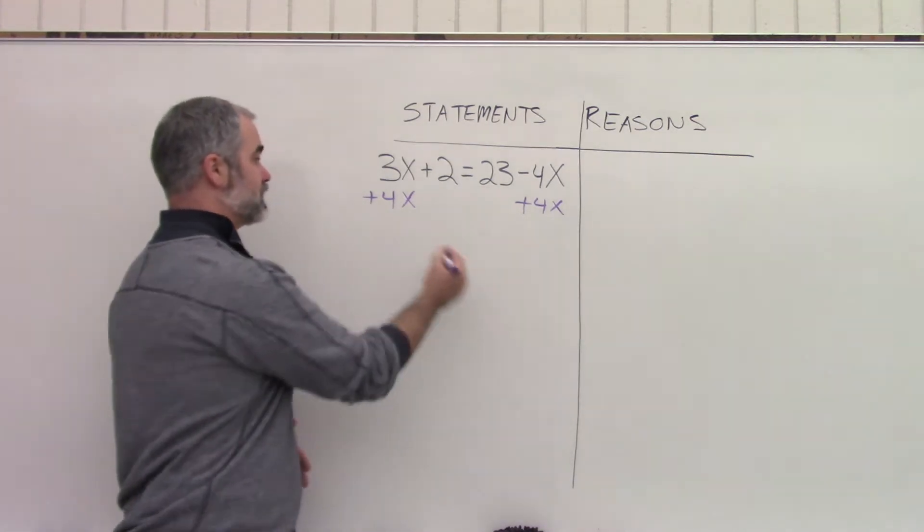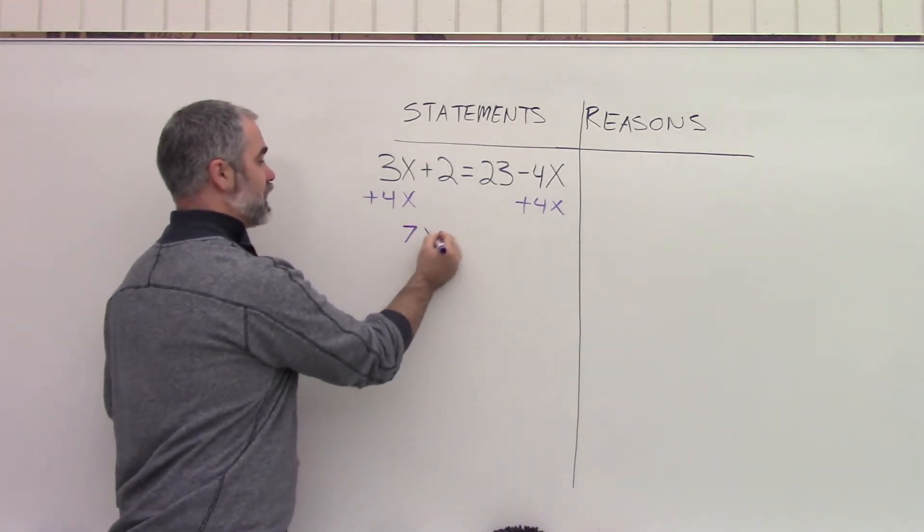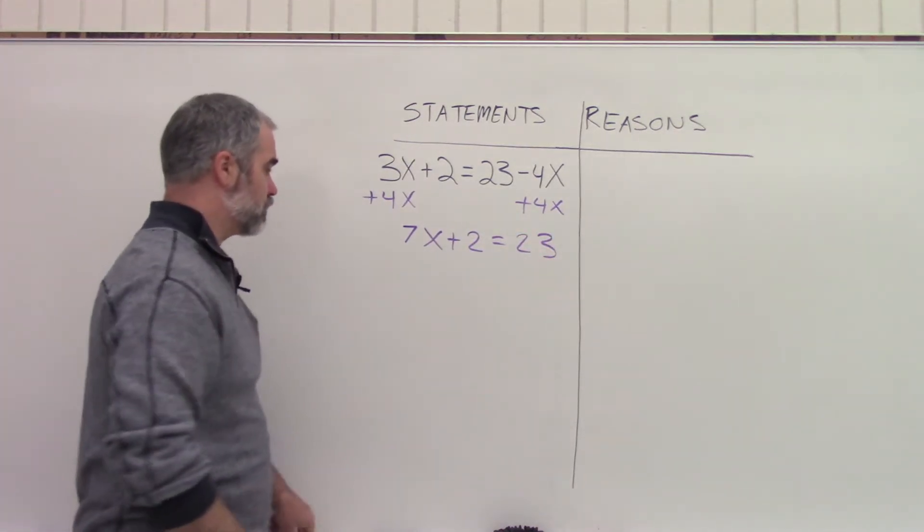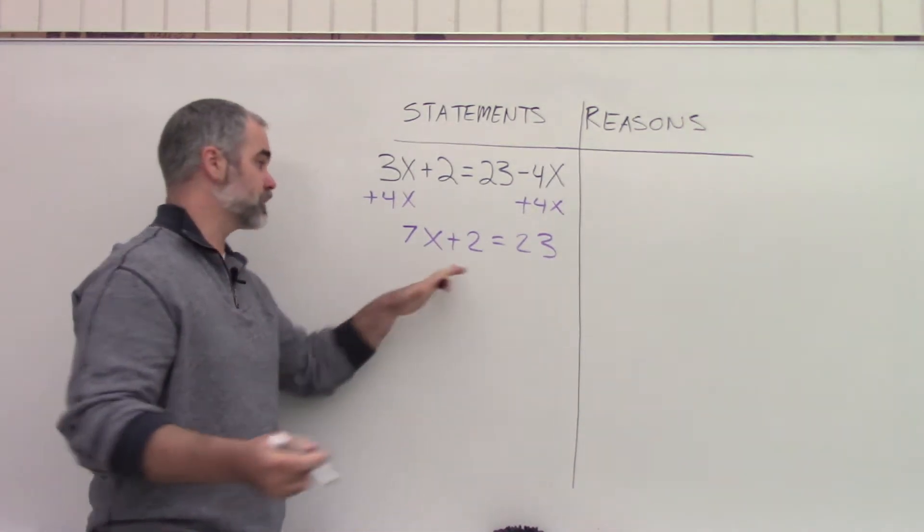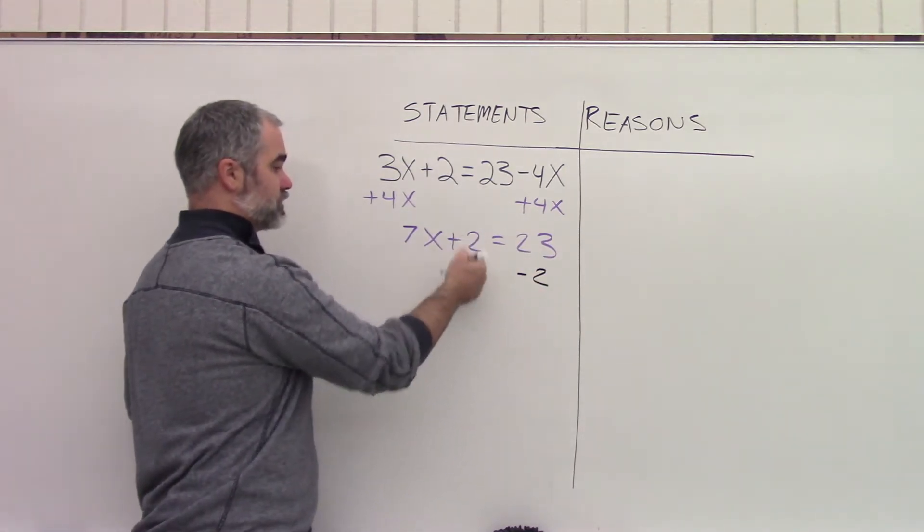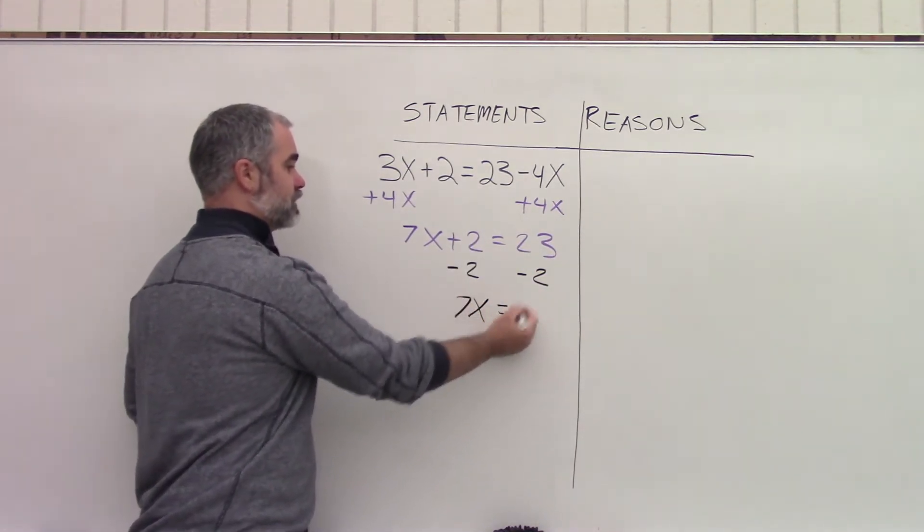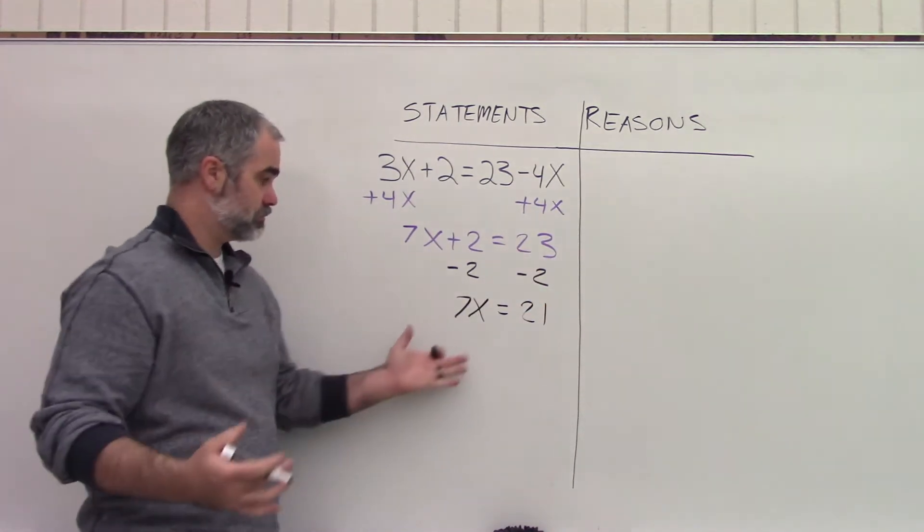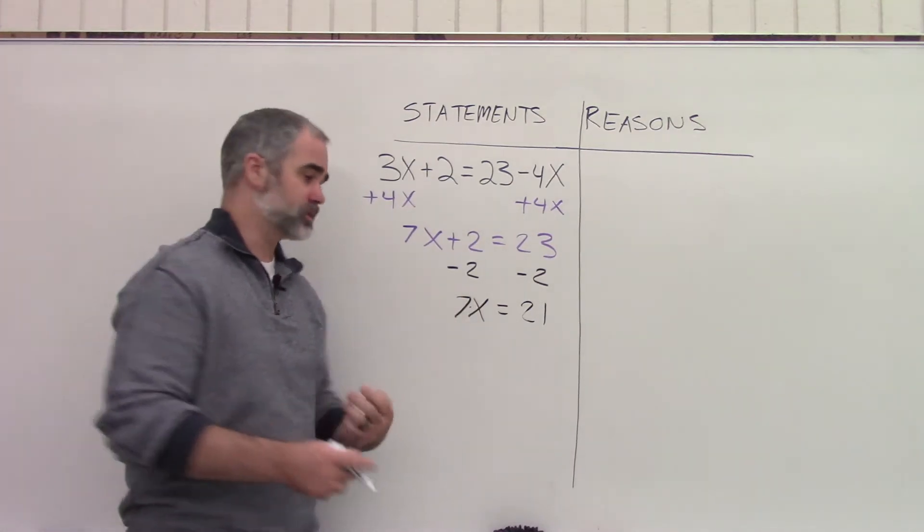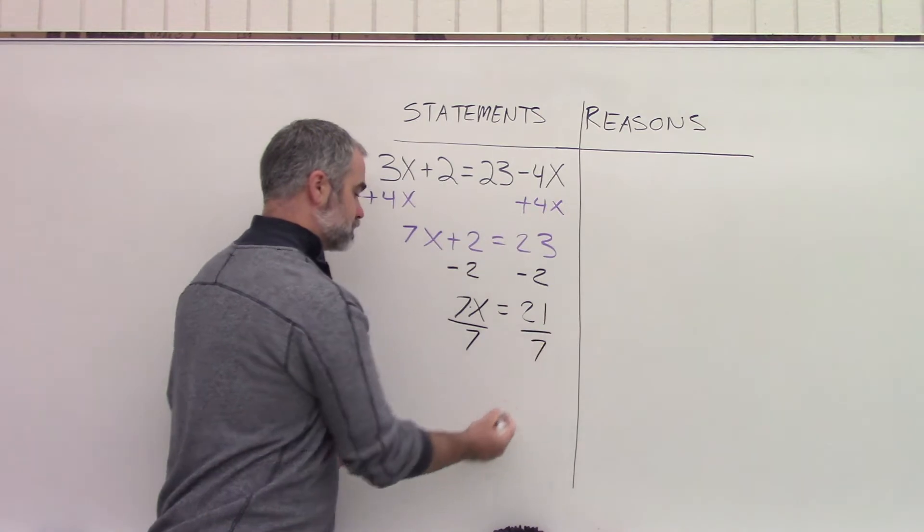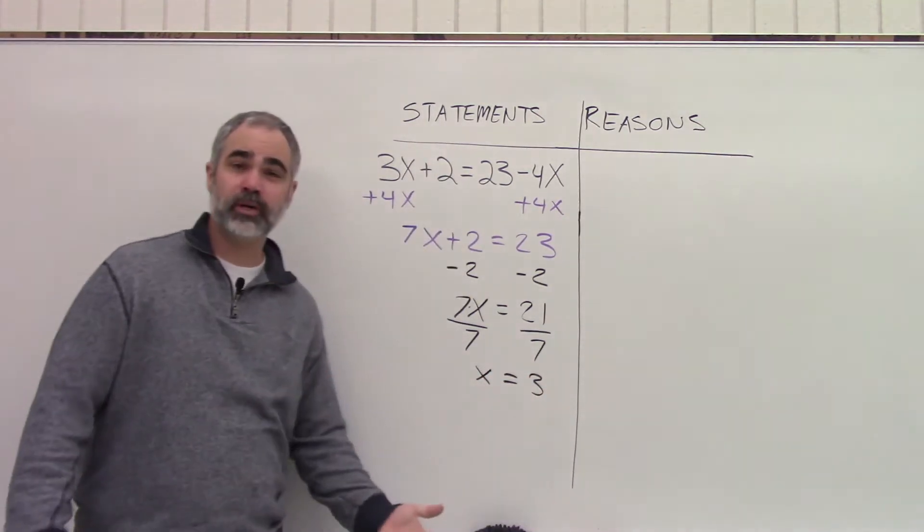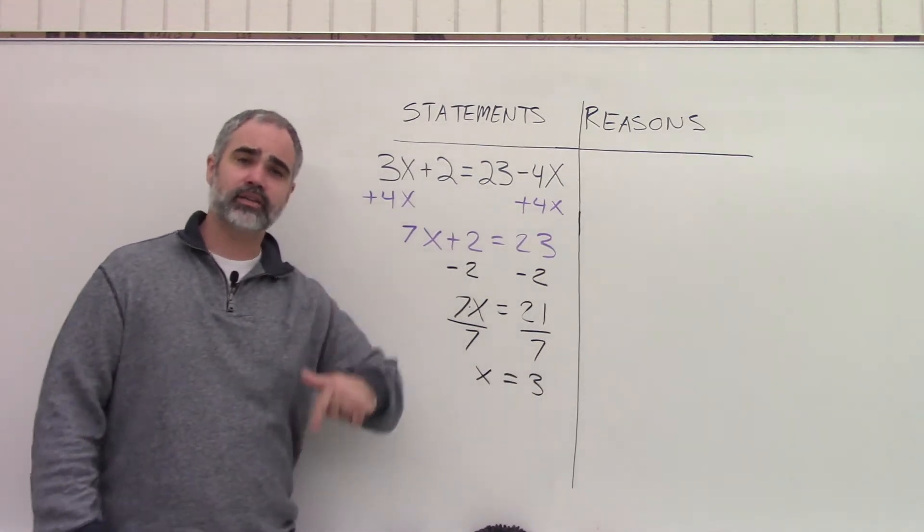I'm hoping this is very familiar and relatively easy. You end up with 7x plus 2 equals 23. And now we want to go ahead and get the x by itself. We're going to subtract 2, leaving us 2 minus 2 is 0, so I just have a 7x. 23 minus 2 is 21. And then I have one more step to do. This is multiplication. I do the opposite of multiplication, which is division, which leaves me with x equals 3.